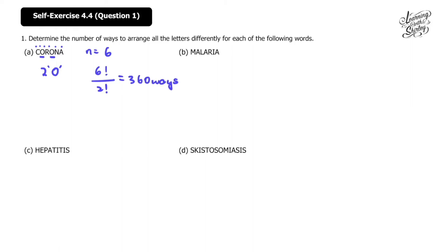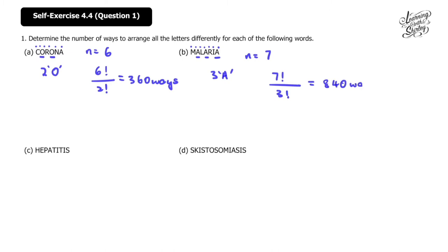For part (b), 'malaria': there are 7 letters in the word. We check for repeats — there are 3 A's. So the number of ways will be 7 factorial over 3 factorial, and the answer is 840 ways.